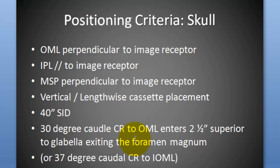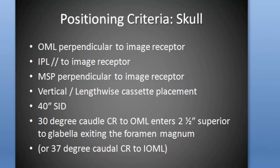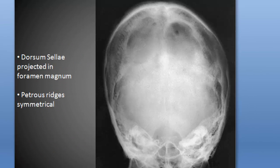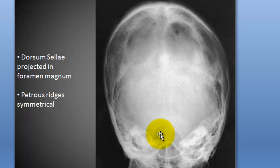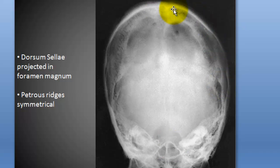If you have the IOML perpendicular, you can angle 37 degrees caudal. You should have the dorsum sella projected right through the middle of the foramen magnum. This is an ideal position here. Just look at the shape of the skull — even though this is a good position, the shape is not really symmetrical.